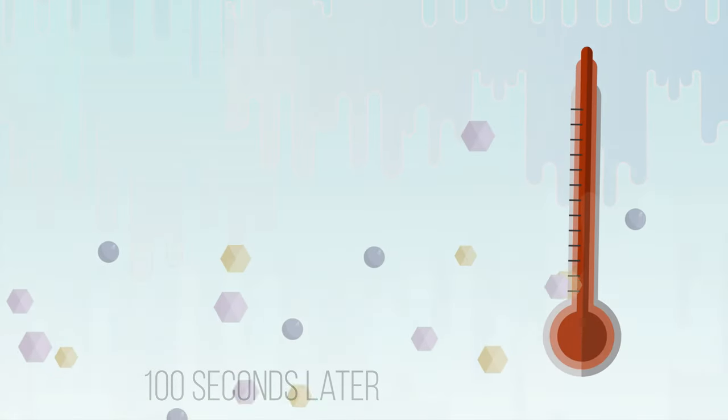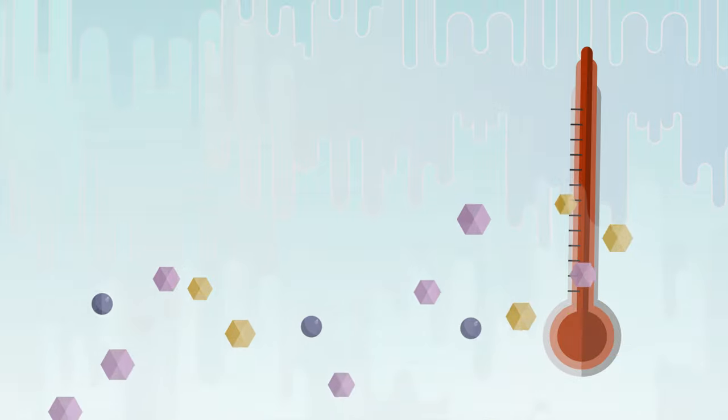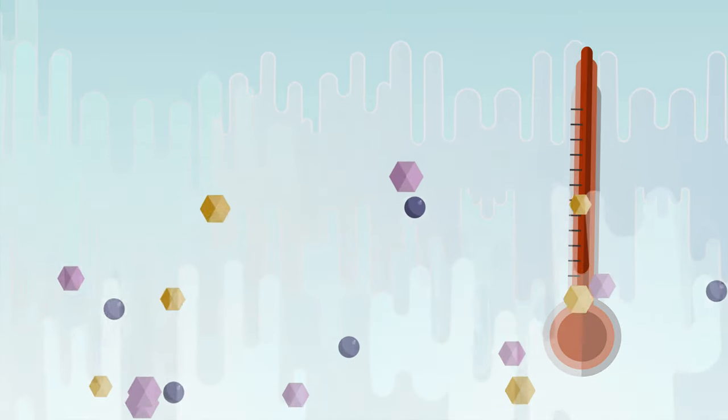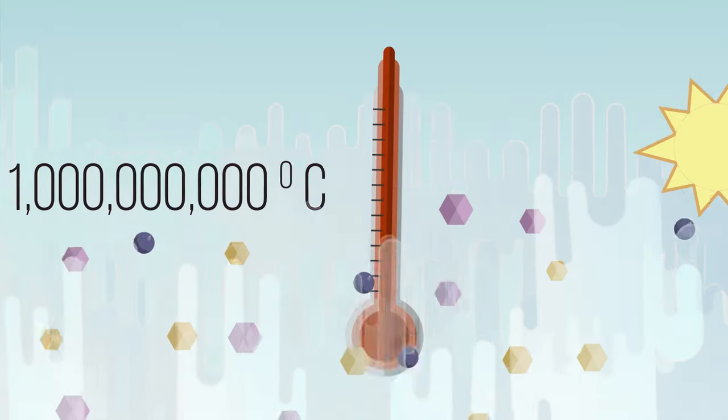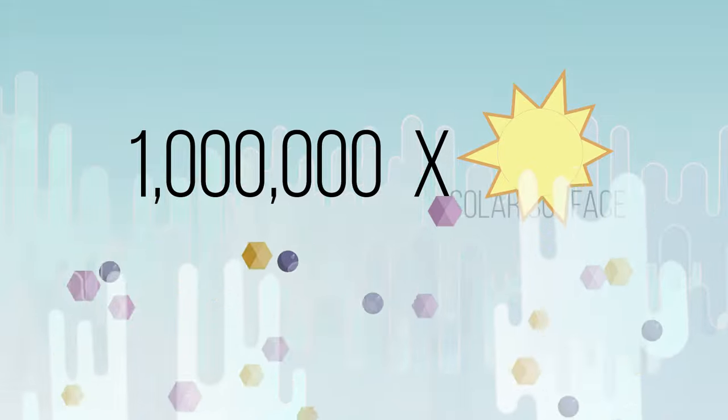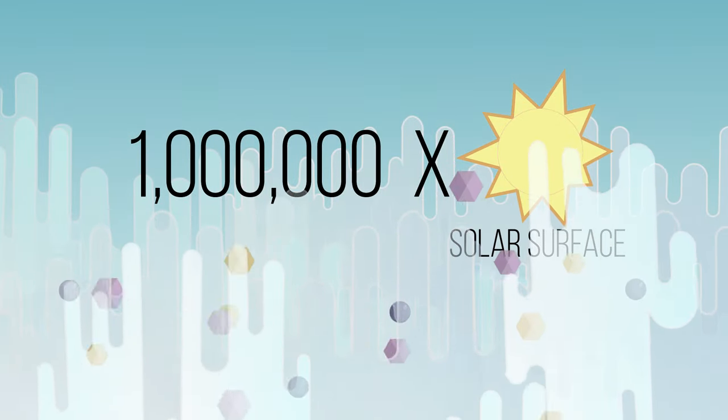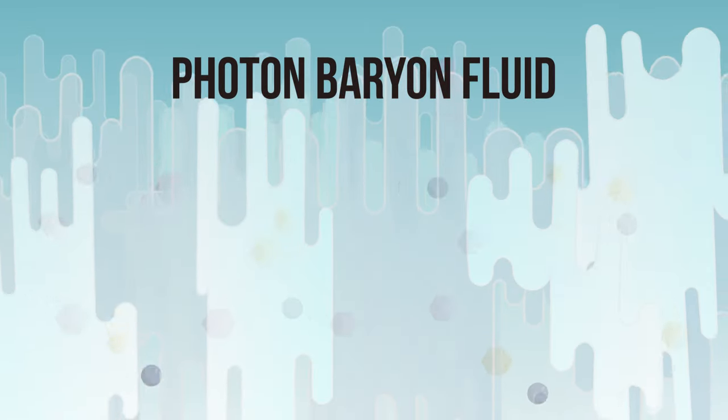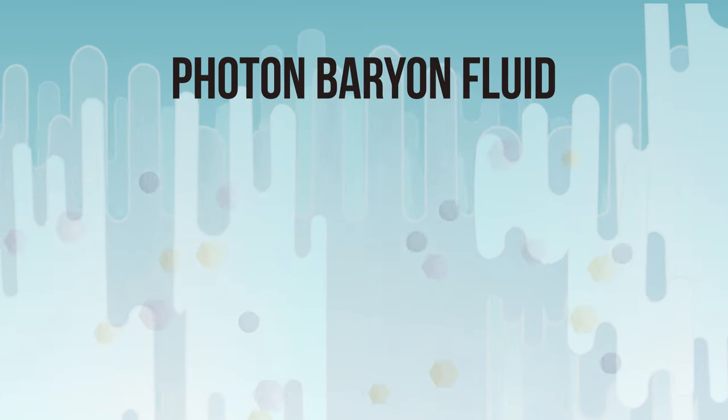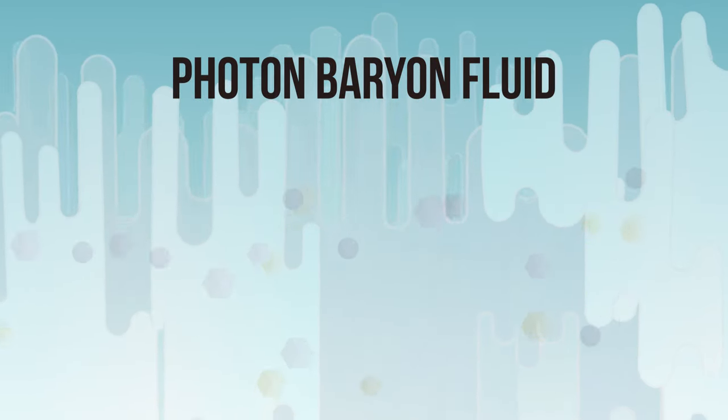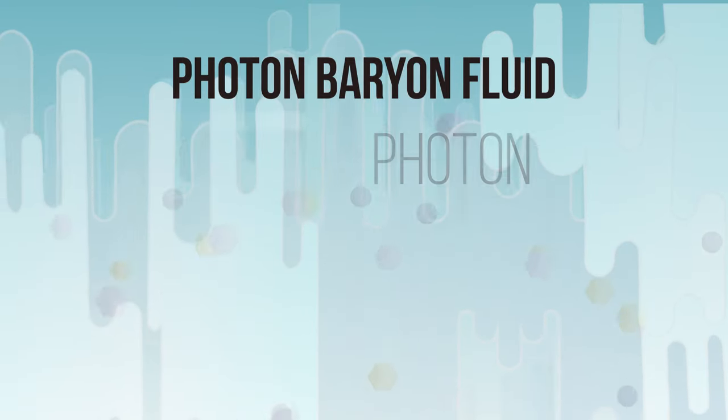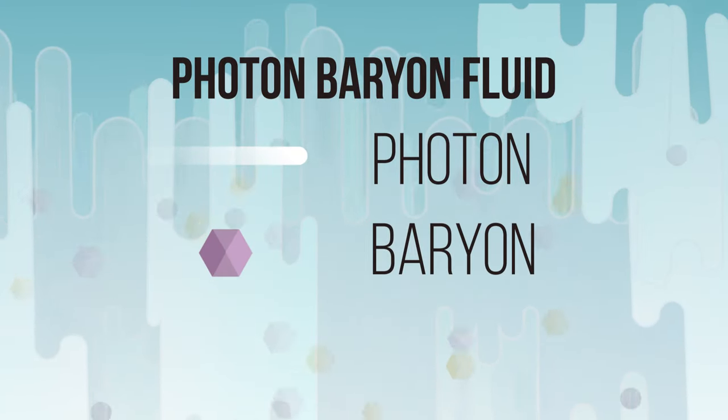the universe has continued to expand and has become a dense soup of particles about a billion degrees Celsius. That's roughly a million times hotter than the sun today. So hot that matter and energy are essentially the same thing. Our universe soup is called the photon baryon fluid because it's made of mostly photons and baryons with a dash of electrons.